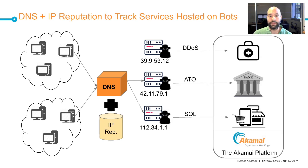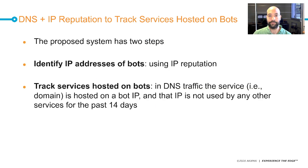We combine the two: DNS and IP reputation. As a first step, we collect IP reputation based on bots that attack websites hosted on the Akamai CDN. Then on the DNS side, we look for machines that are being resolved to those IPs. We focus first on identifying IP addresses of bots, and then as a second step we look for domain names on the internet that exclusively resolve to an IP known to be associated with a bot over a sufficiently long period of time.